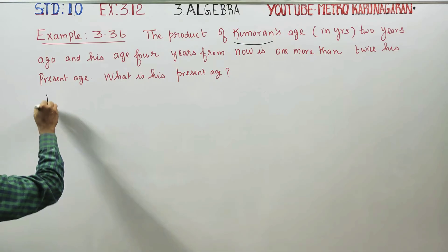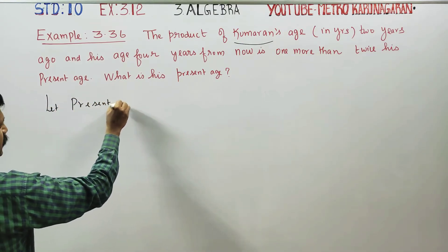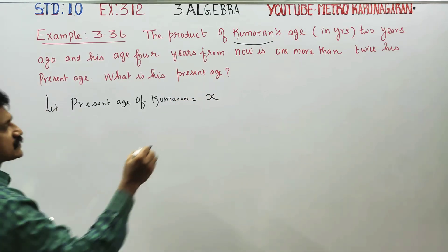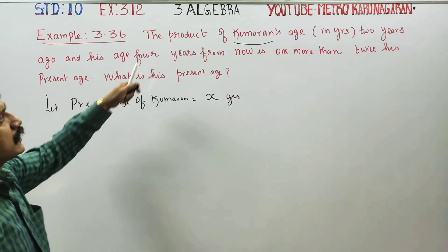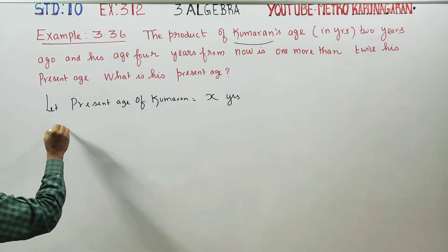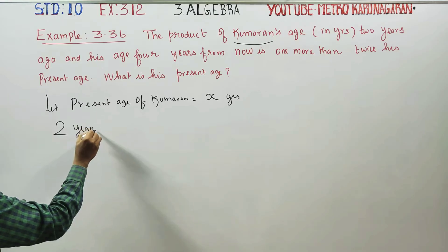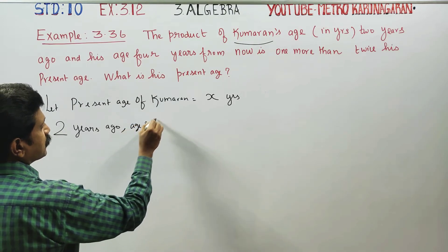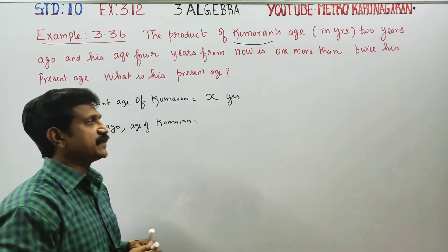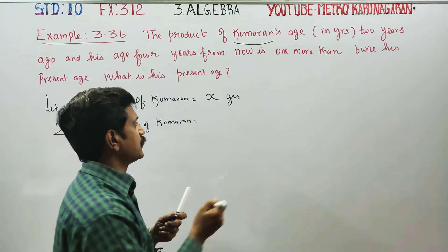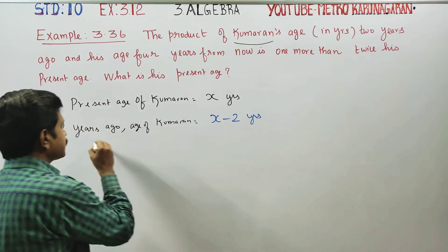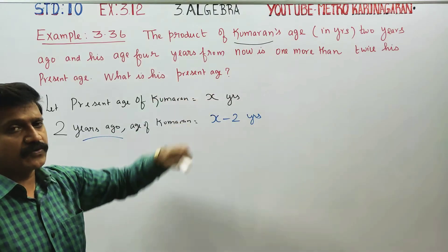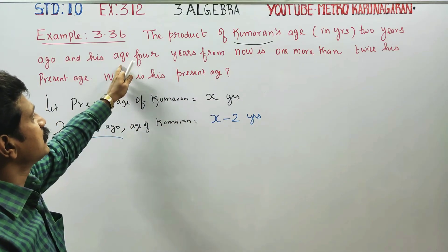Let the present age of Kumaran be X years. Two years ago, the age of Kumaran is x minus 2. Four years from now, the age of Kumaran is x plus 4.